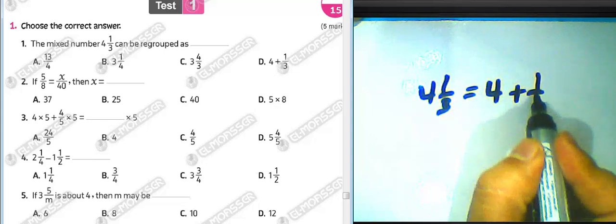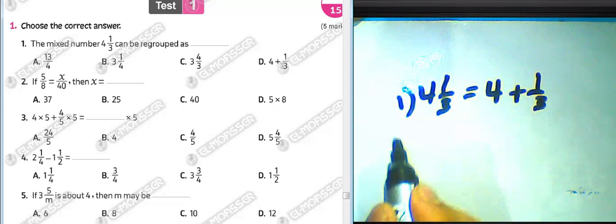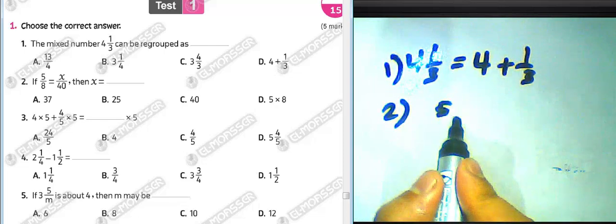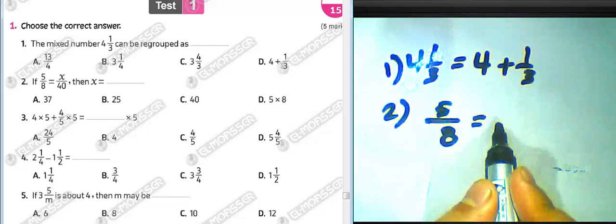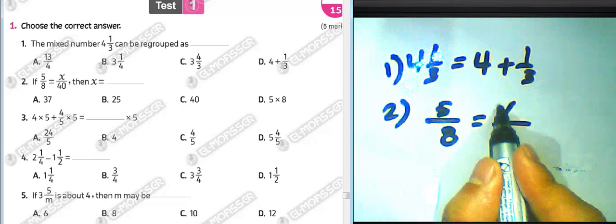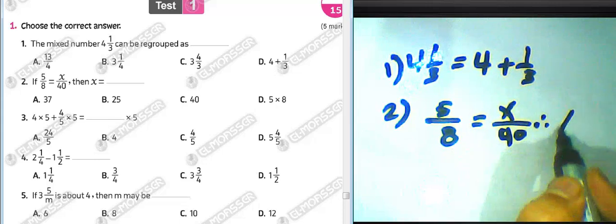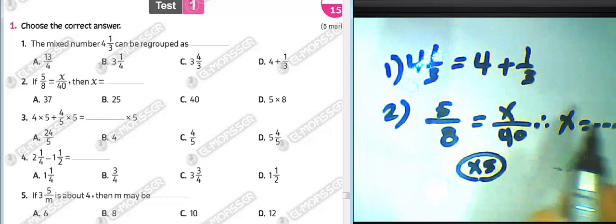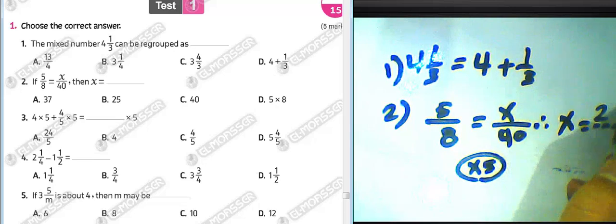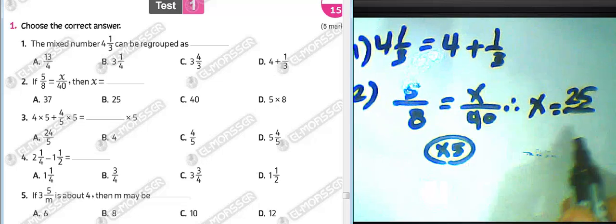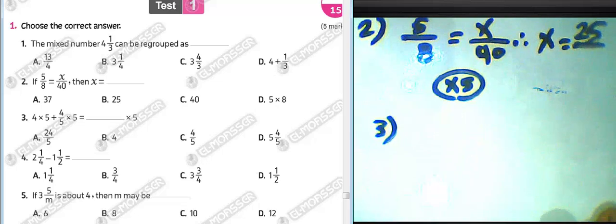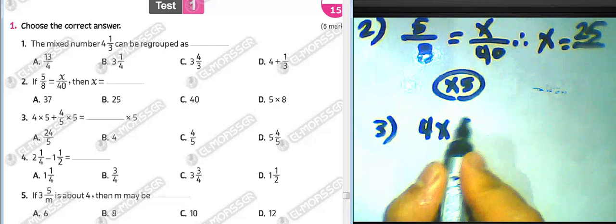Question number two: if five over eight equals x over 40, then x must equal what? We know eight times five equals 40, then five times five equals 25, so x must be equal to 25.